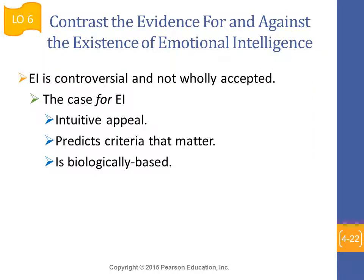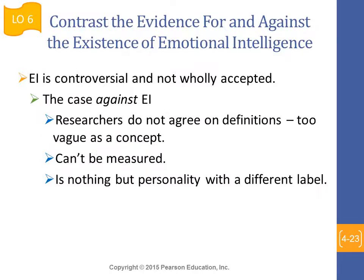EI is controversial and not universally accepted in academia or at the practitioner level. Supporters argue that EI is intuitive, predicts criteria that matter, and works with good examples to support it. Critics argue that the definitions are too vague, it cannot be measured reliably, and that it may simply be describing personality with a different label. These are the main controversies and confusions surrounding EI.